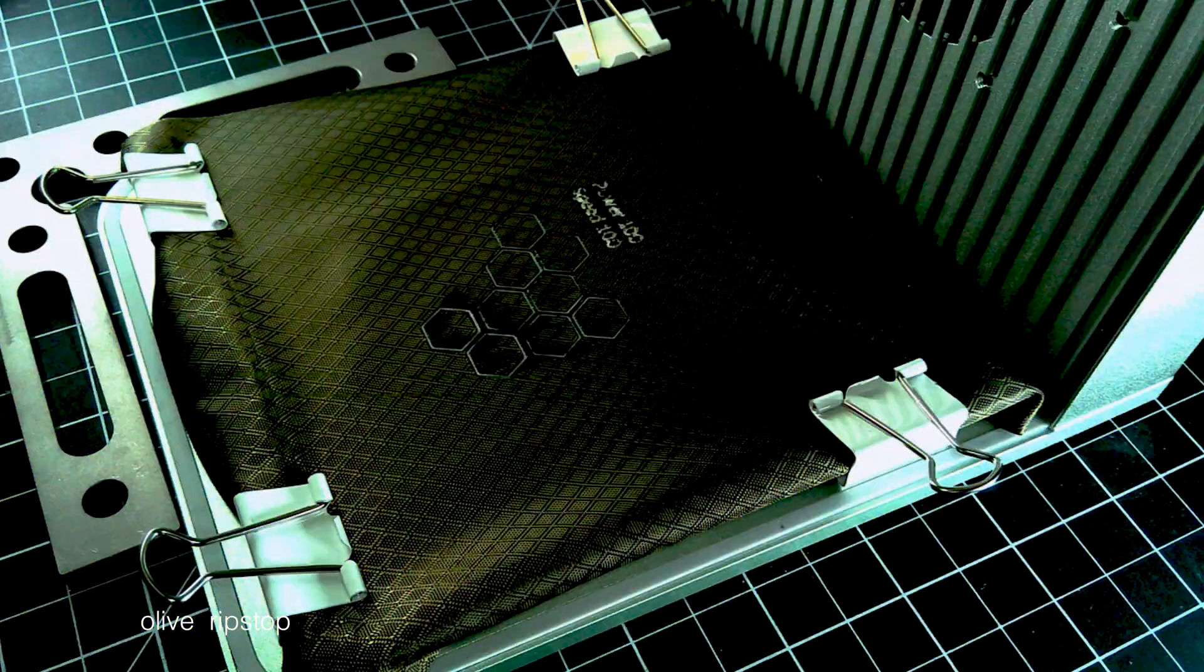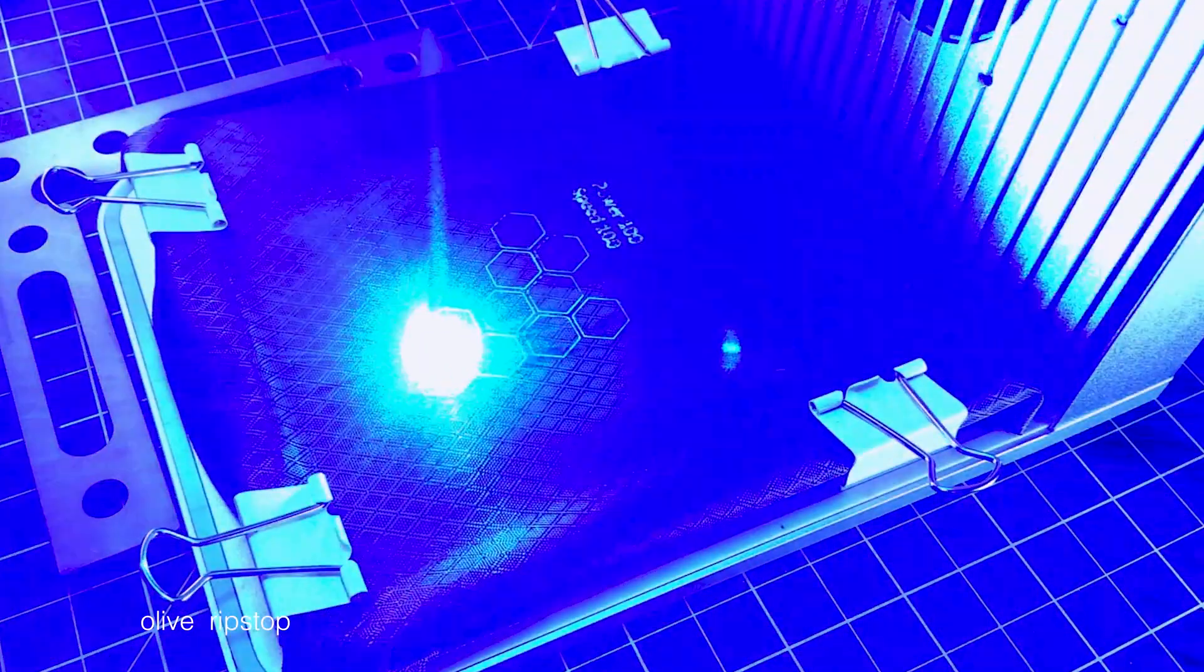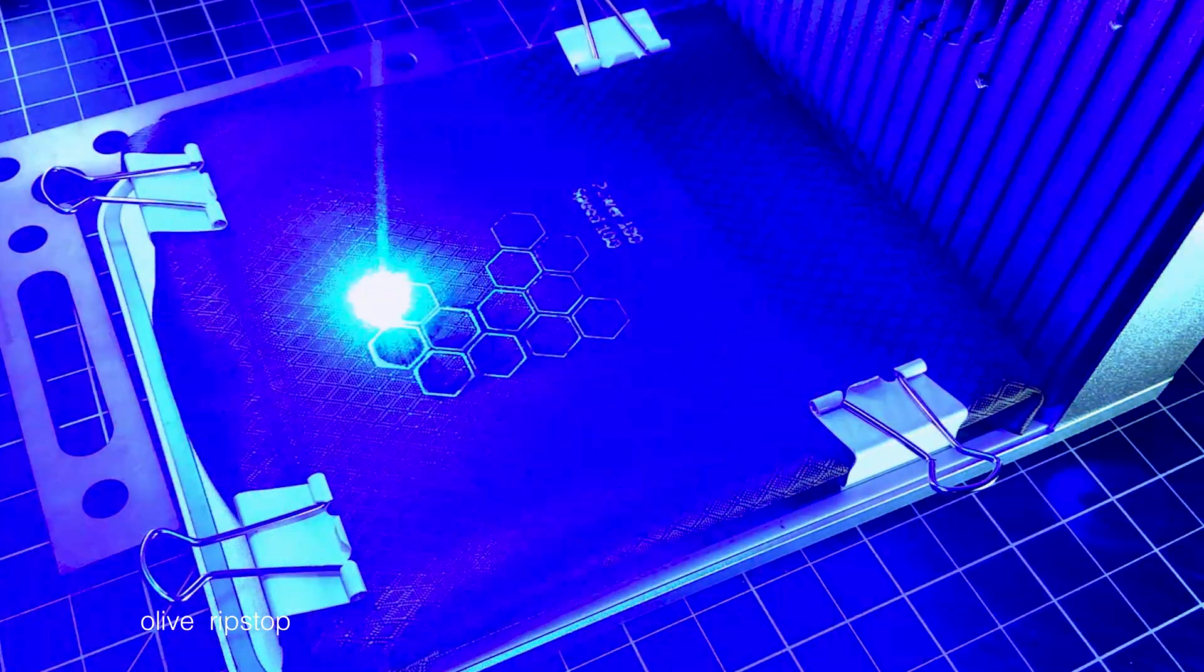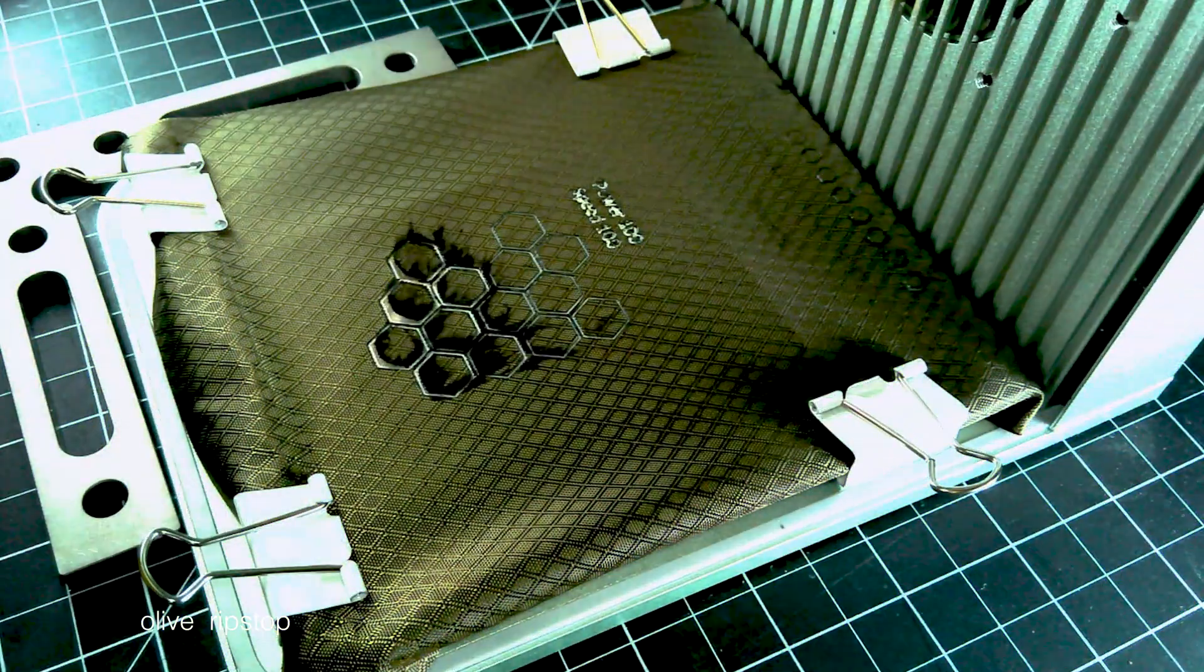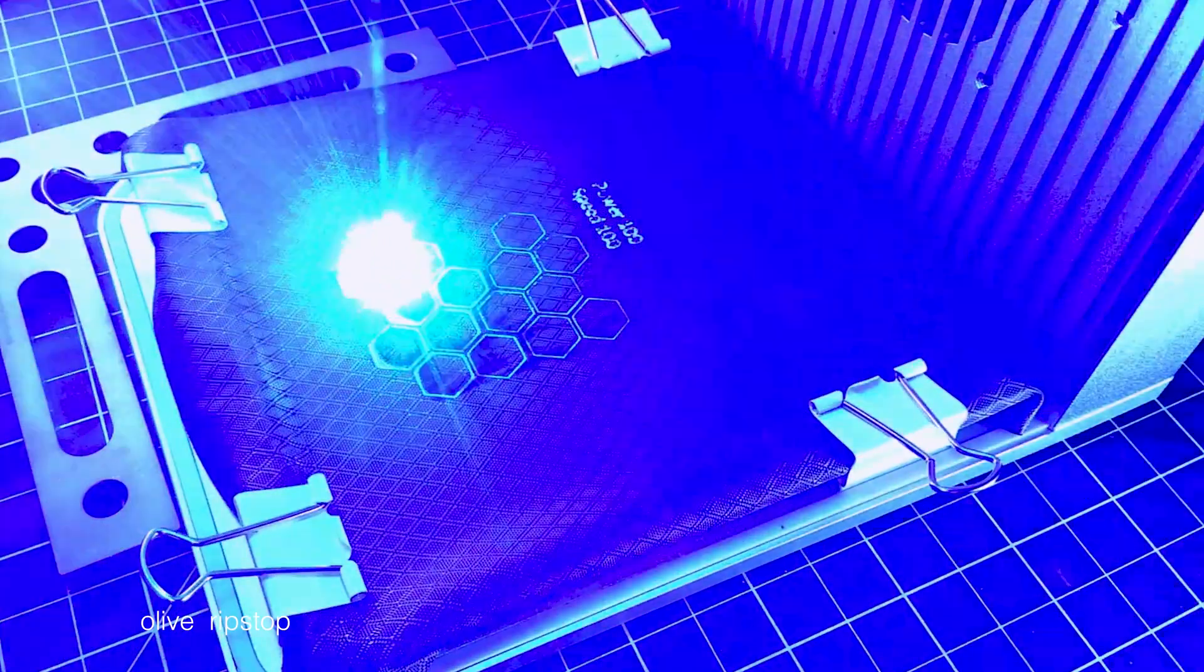At full power and 100 millimeters per second, the blue diode laser cuts almost all the way through. Since a second pass at the same power and speed scorched the material, finishing the cut at a lower power and or faster speed is recommended.